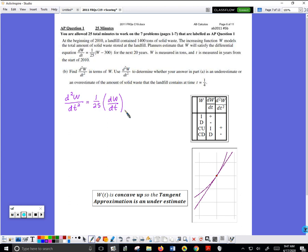Because it says in terms of W, so now we have to plug in what DW over DT is. So we'd say 1 over 25, then 1 over 25 again, W minus 300. You have that in purple right here. You don't have to have a box—that's one point.